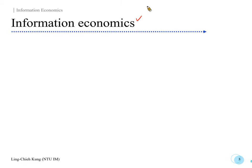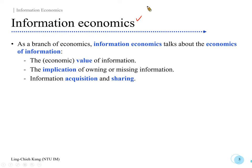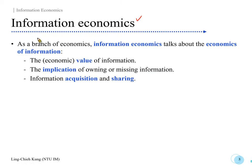So let's start. This term, information economics, is obviously some kind of economics — you may also call it economics of information. Basically, it is a branch of economics that talks about whether information is valuable in an economic sense, what's the implication of owning or missing some information, and about information acquisition and information sharing. So it's not just related to information technology or information systems — that's important, but that's not everything. As long as you are talking about the economics of information, it belongs to information economics.